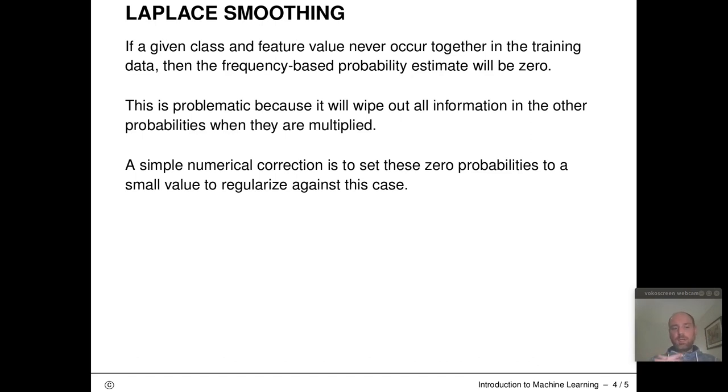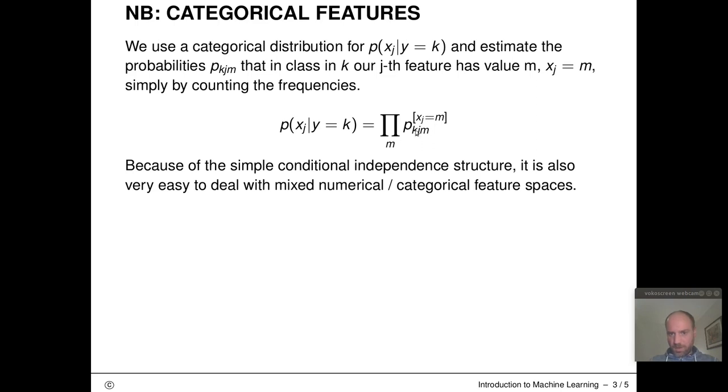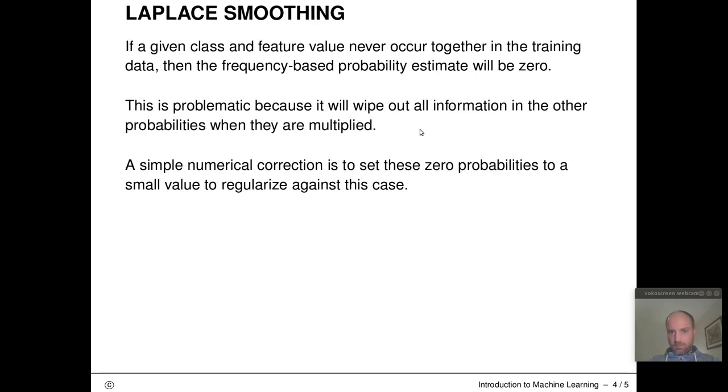There's one extra technical problem we usually have to consider in Naive Bayes, especially in higher dimensional spaces and especially if we don't have too many observations. If a given class and feature value never actually occur together in our training data, then this frequency-based probability estimate will be exactly zero. So one of these terms could be exactly zero. This is a problem because we're multiplying things up later, and this would wipe out all information and all the other probabilities when this multiplication is being performed.